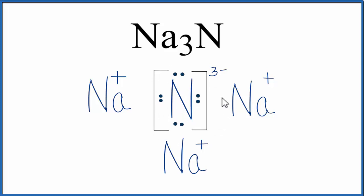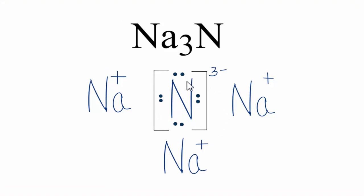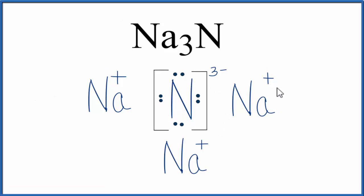When it did that, the nitrogen has an octet, a valence electron, so it's stable. Note that this is what we call a formula unit for Na3N.